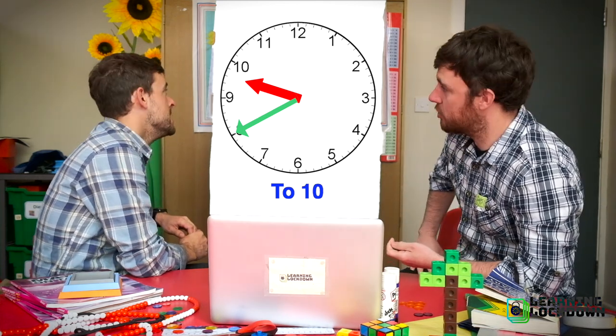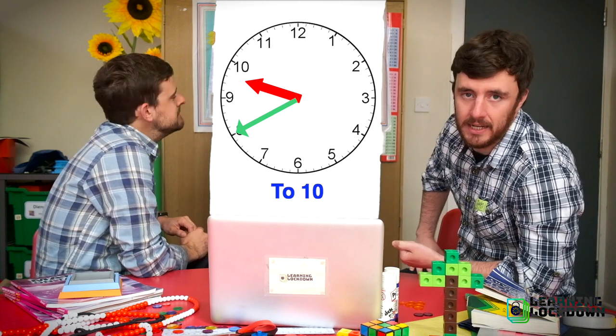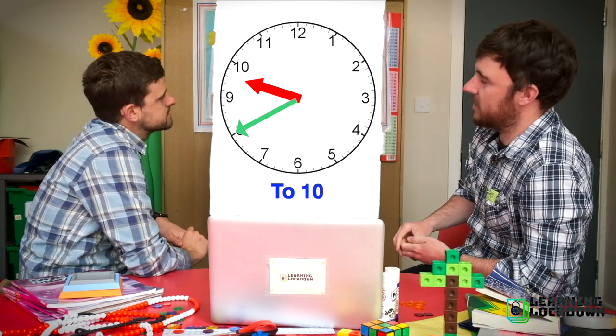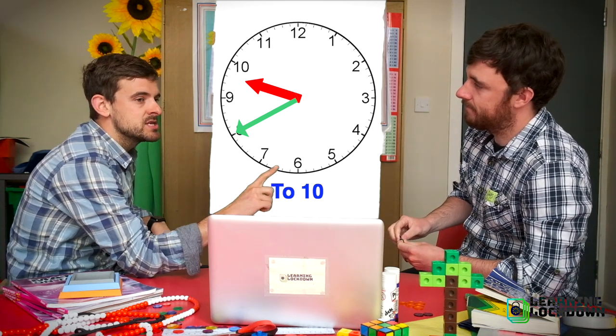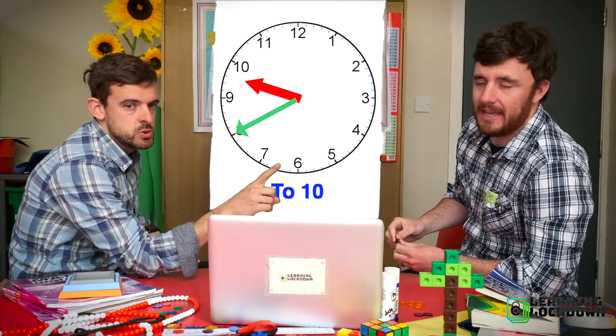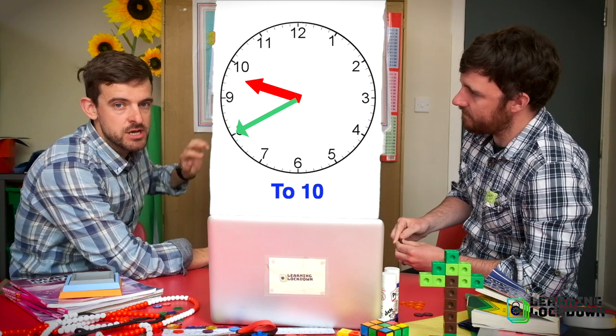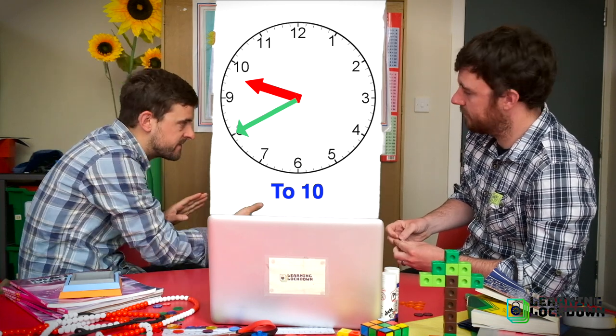The final bit we need to work out is how many minutes until it gets to ten. Now that's important: how many minutes until it gets to ten. So we're trying to figure out the remainder of the journey, not how long the journey's been so far from the hand all the way around the face, but how long is left on the journey.